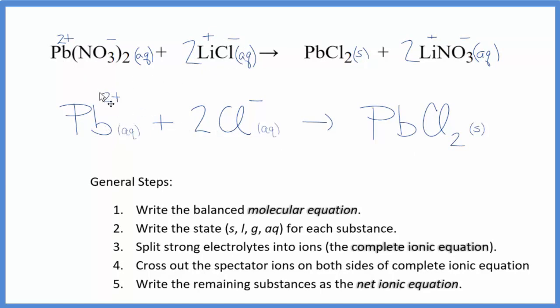You'll notice we have 2 plus here, 2 times 1 minus is 2 minus, 2 minus, 2 plus. That adds up to zero, net charge of zero. Over here, neutral compound, net charge of zero. If you count the atoms up, they are balanced as well. This is Dr. B with the balanced net ionic equation for Pb(NO3)2 plus LiCl. Thanks for watching.